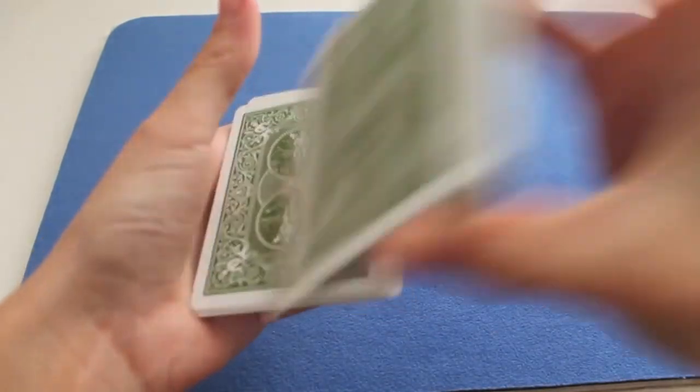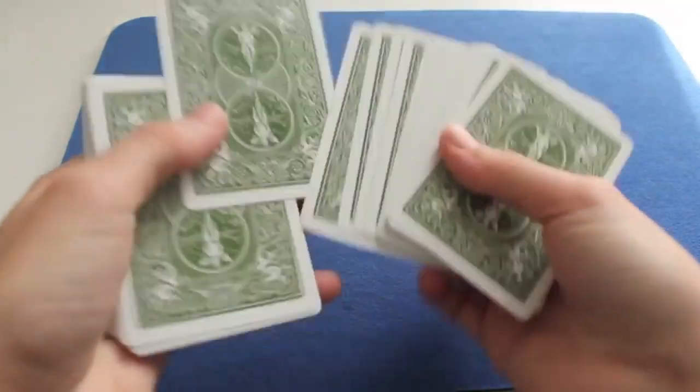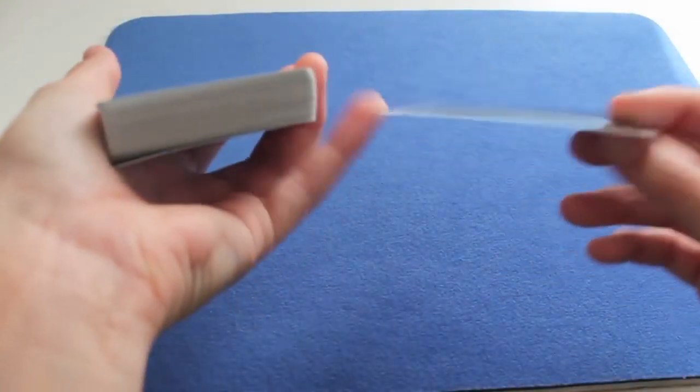First, the spectators shuffle the cards. Normal shuffle. They pick one, let's say for example, the six of hearts, and now you need to control it to the top.